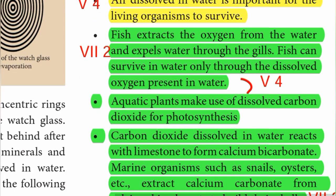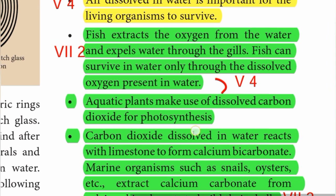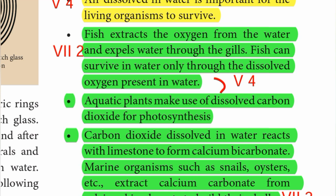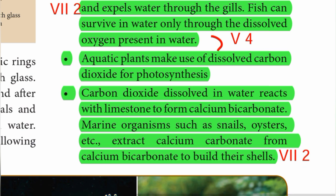Fish extracts the oxygen from the water and expels water through the gills. Fish can survive in water only through the dissolved oxygen present in water. Second point: aquatic plants make use of dissolved carbon dioxide for photosynthesis.